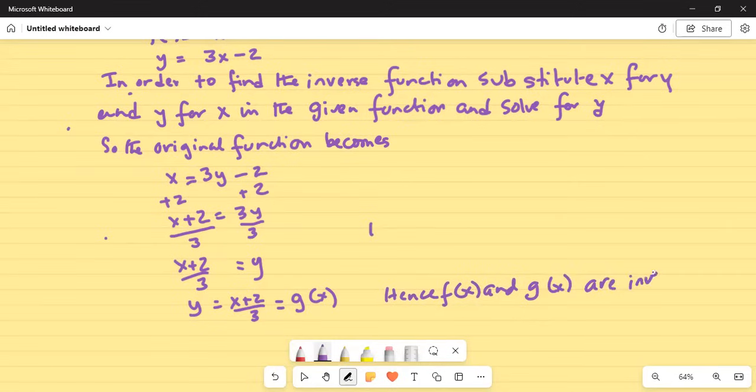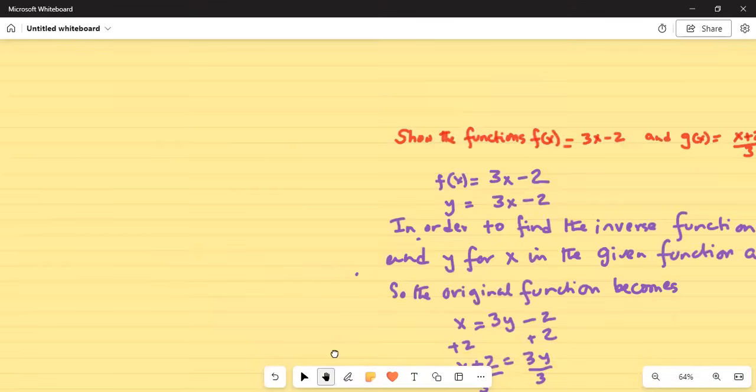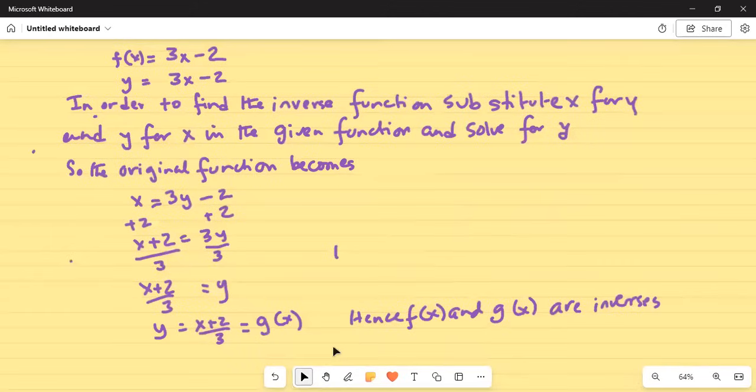Let me give you an important hint or tip. The hint or tip is in the original function f(x) = 3x - 2, to find the inverse I will substitute for y, x, and for x, y. So original function is y = 3x - 2. For y I will write x = 3y - 2, and then I solve for y, which is (x + 2)/3, which is same as the function g(x).